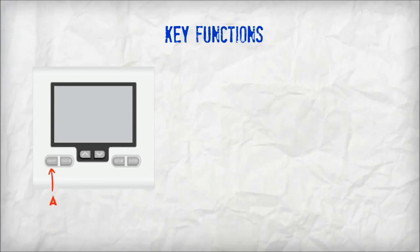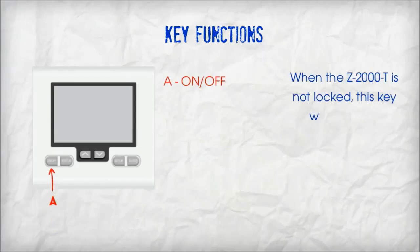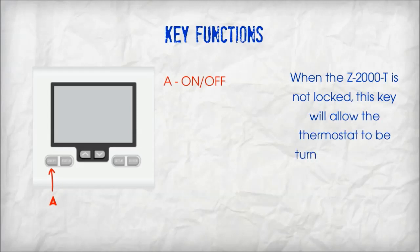Function key A: on and off. When the Z2000T is not locked, this key will allow the thermostat to be turned on or off.